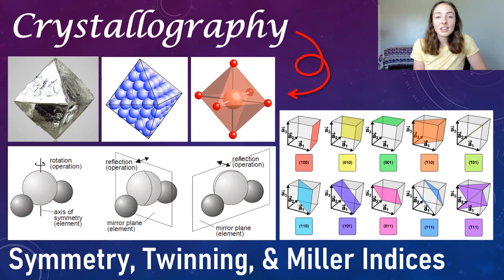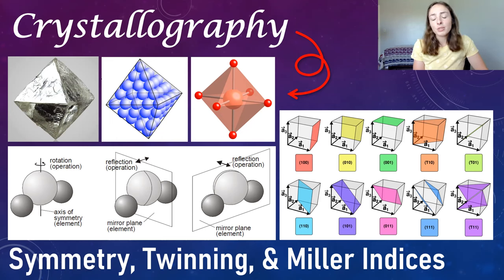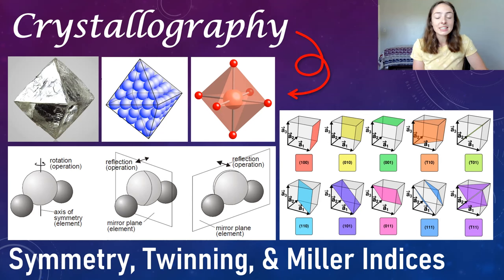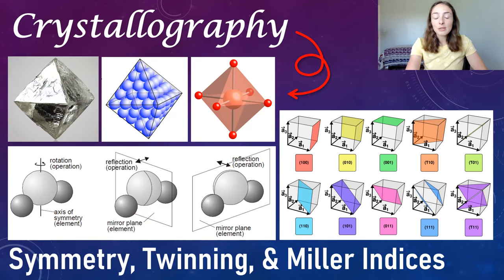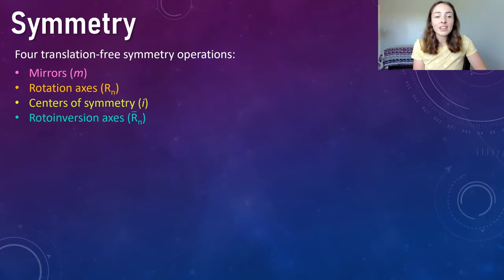Today we're going to be talking about symmetry and twinning in crystals and Miller indices — mainly of planes, but we'll talk about what Miller indices are in general, how you can figure out a Miller index of a plane, and why that matters for crystallography or mineralogy. So we'll start with symmetry.